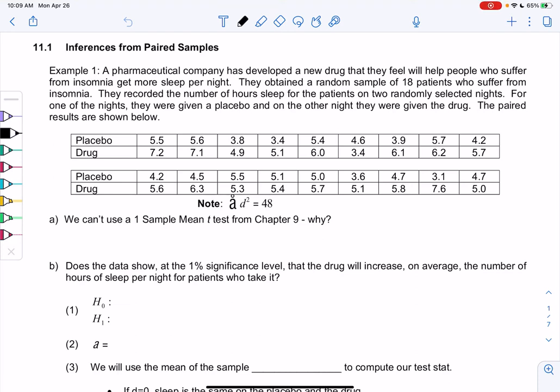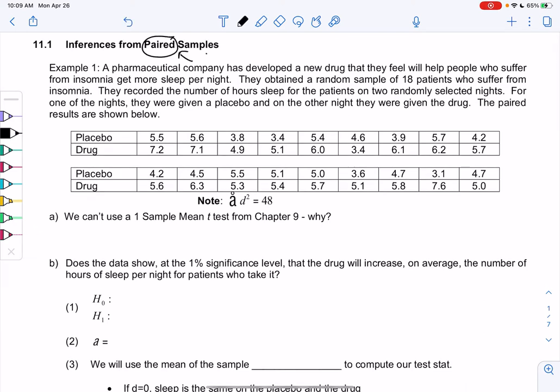Section 11.1, inferences from paired samples. Paired means I'm going to have two samples rather than one. Example one: a pharmaceutical company has developed a new drug that they feel will help people who suffer from insomnia get more sleep per night. They get a random sample of 18 patients who suffer from insomnia and record the number of hours they sleep for two randomly selected nights. That's where my second sample is coming from.